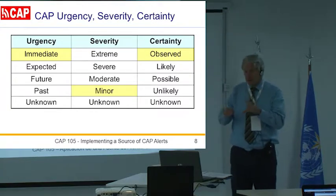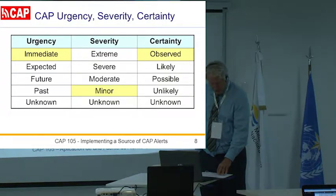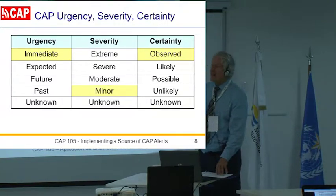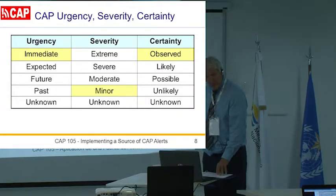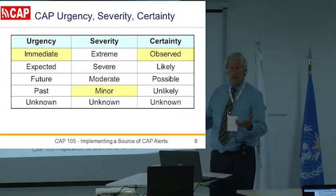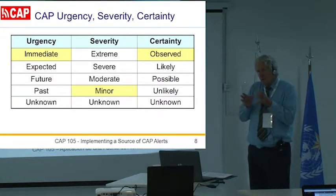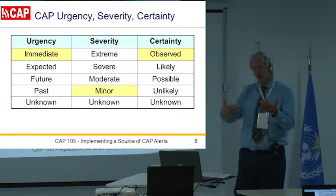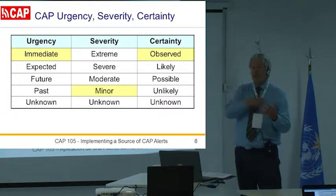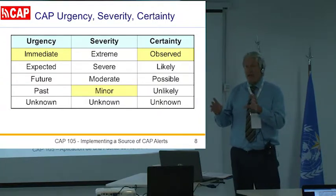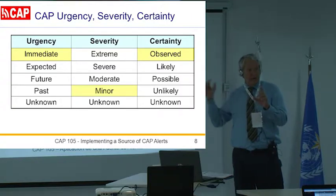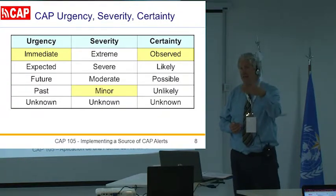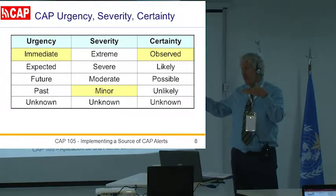For urgency, we can choose between: immediate — responsive action has to be taken right now; expected — within the next hour; future — beyond an hour but in the near future; and past — no longer needed. When we talk about urgency, we mean from the time we want you to start taking action. If you've got a hurricane coming ashore in the Florida Keys, it takes two or three days to evacuate, so two or three days before the hurricane arrives, we start telling you to act. The urgency is 'act now' even though the event might be several days away.